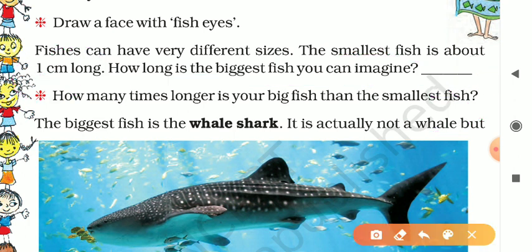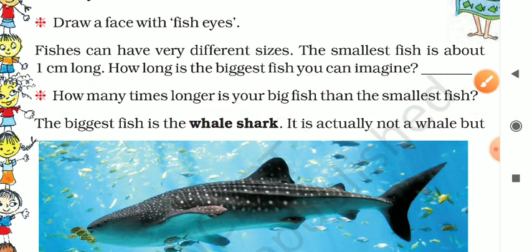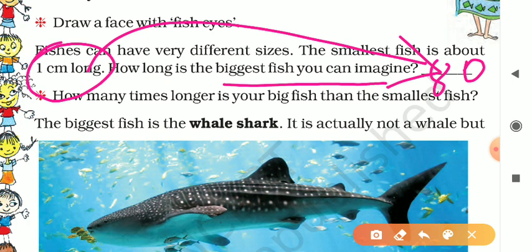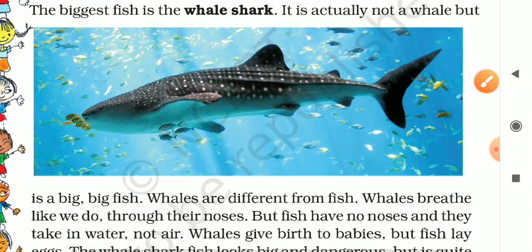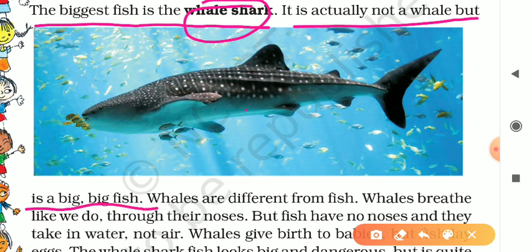How many times longer is your imagined big fish than the smallest fish? The smallest fish was one centimeter, and we imagined the biggest fish as 80 centimeters — so it would be 80 times longer. Now here is something about the whale shark, our second topic. The biggest fish is the whale shark — remember that. It is the biggest fish in the world.